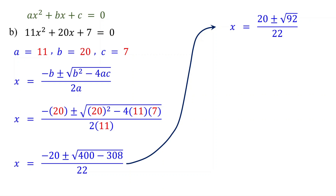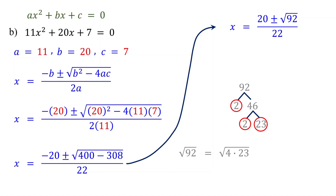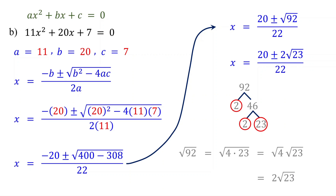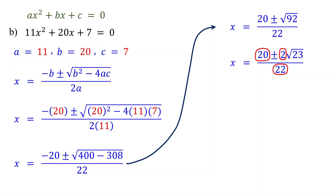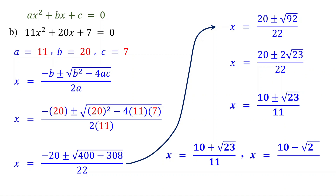92 is not a perfect square, but let's see if we can factor out a perfect square to simplify. Let's do a prime factorization. 92 can be factored into 2 times 46, and 46 can be further factored into 2 times 23. Since 23 is a prime number, we cannot factor any further. So 92 is the same as 2 times 2 times 23, which equals 4 times 23, meaning 4 is the highest perfect square we can factor out from 92. Notice that these numbers have 2 as a common factor, so we can simplify by dividing each of them by 2. You can leave your solution as it is, or write it to show the two solutions separately.